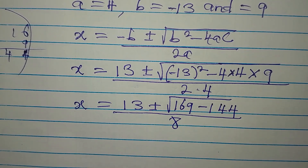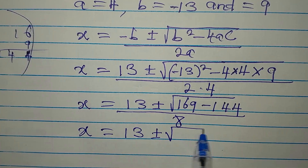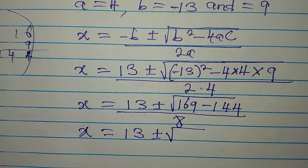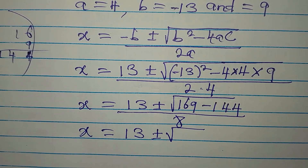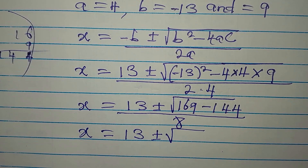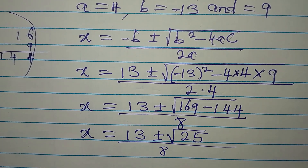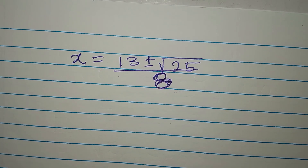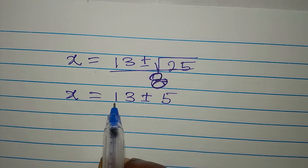Now look at one thing that is going to confuse learners. 169 and 144 are both perfect squares, so they will be tempted to take the square root of 169 and then the square root of 144 and subtract — but that is going to be wrong. The correct next step is to subtract what you have inside before you take the square root. So 169 minus 144 is 25. Then x equals 13 plus or minus the square root of 25, which is 5, over 8.